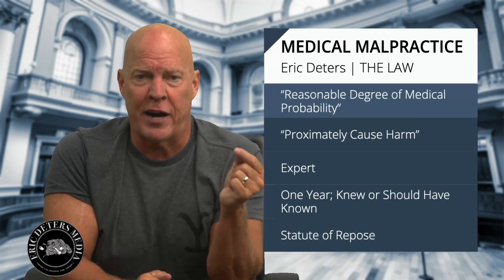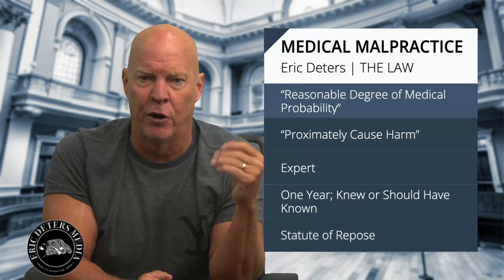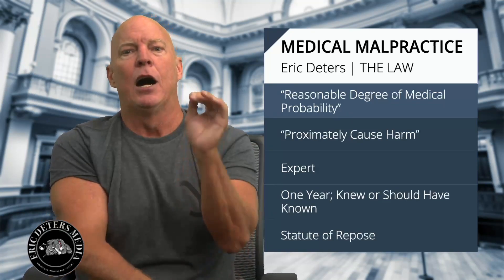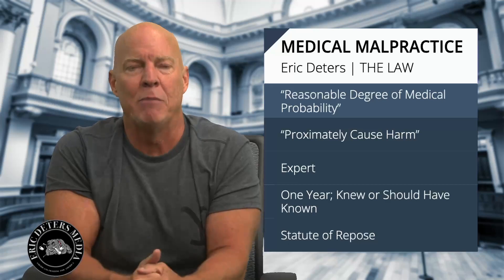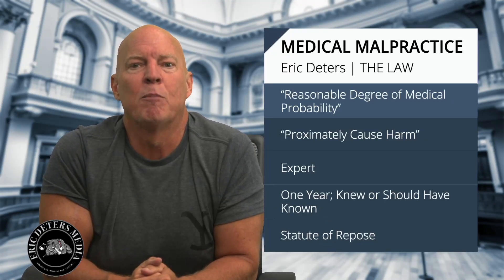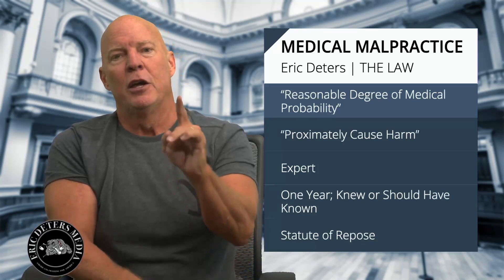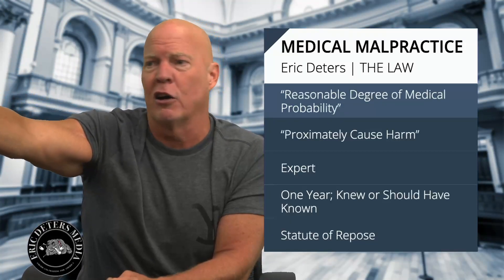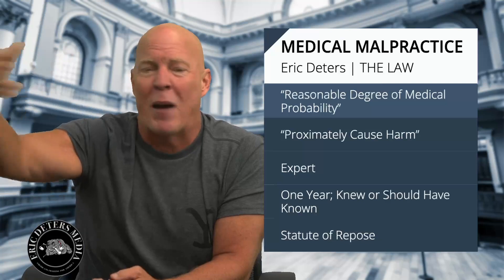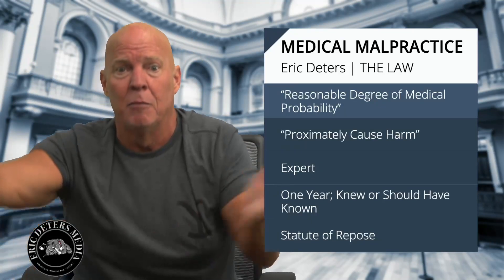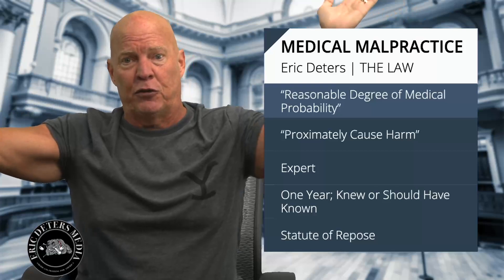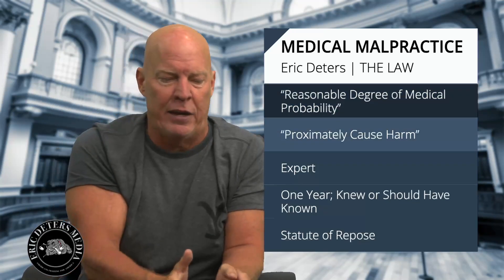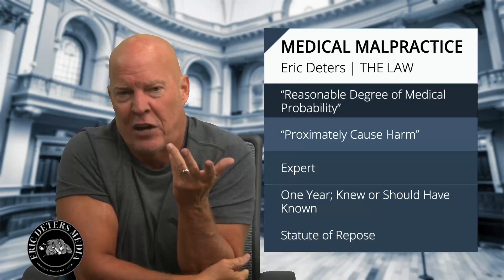You have to prove your case, and this is really important — lay people don't understand this. You have to prove your case based upon a reasonable degree of medical probability, meaning greater than 50%. You have to prove it by the weight of the evidence, tip the scale. You also have to prove that it proximately caused harm, which means it actually caused harm. For example, if a pharmacy gave you the wrong medicine and nothing happened to you, it's negligence, but you weren't hurt — no harm, no case.